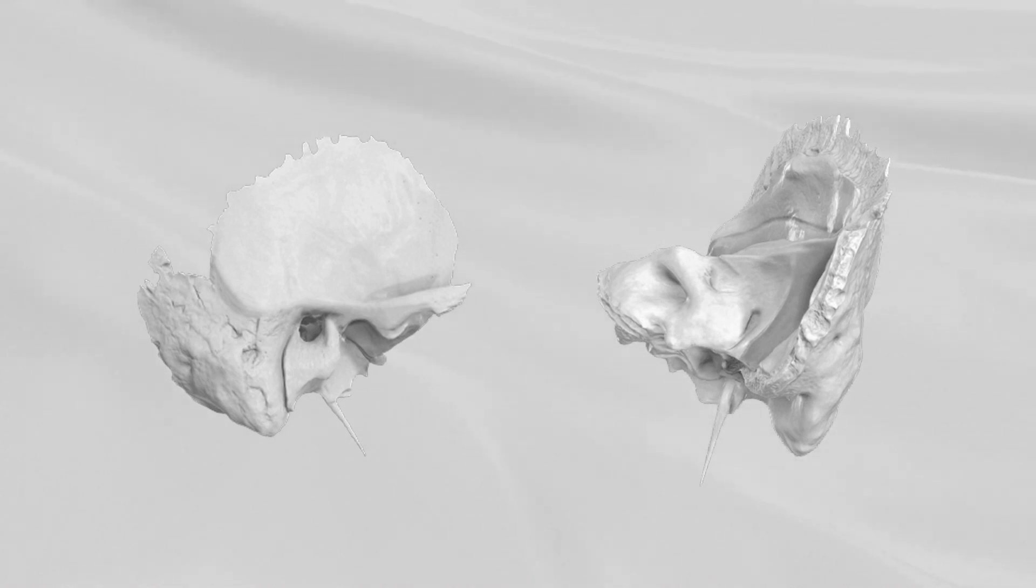The mastoid portion is continued below into a conical projection, the mastoid process, which is somewhat larger in the male than in the female. On the medial side of the process is a deep groove, the mastoid notch or digastric fossa. Medial to this is a shallow groove, the occipital groove, which lodges the occipital artery.